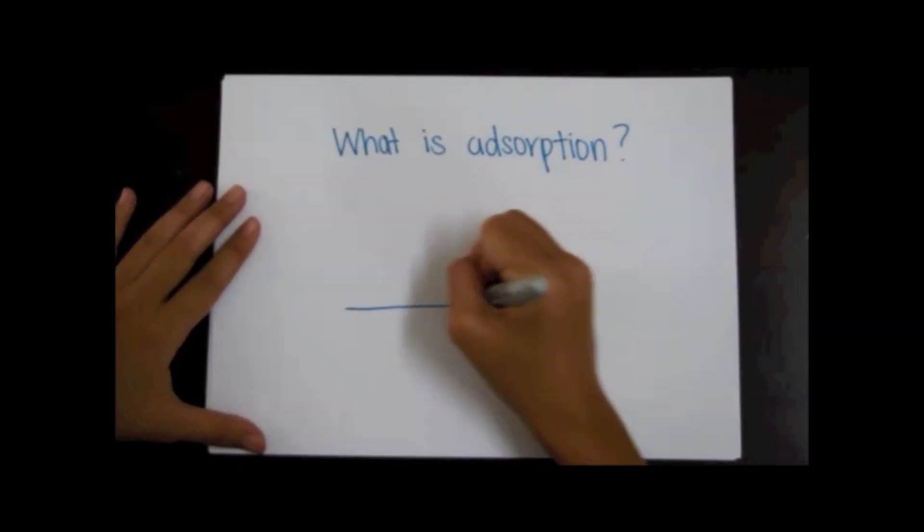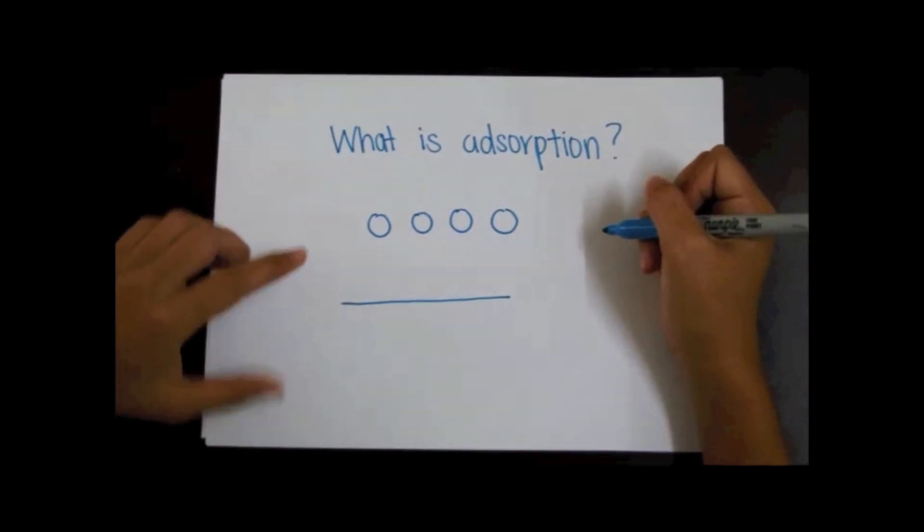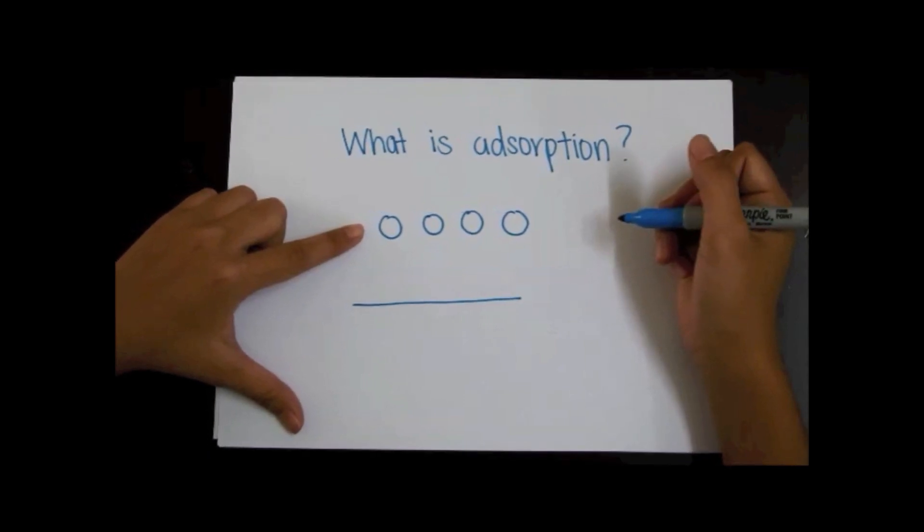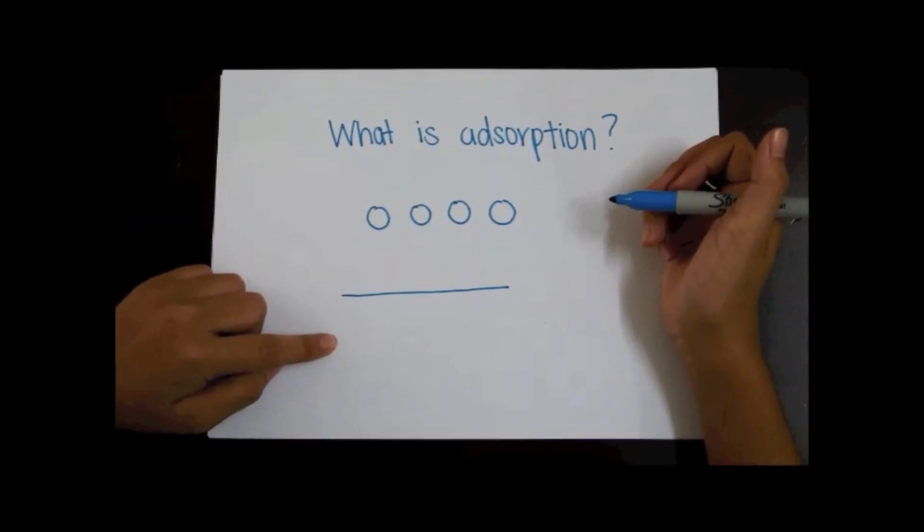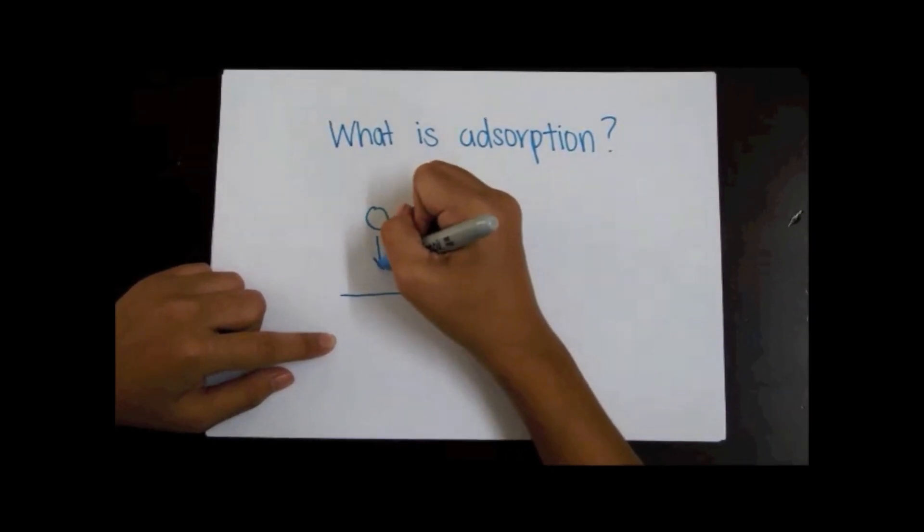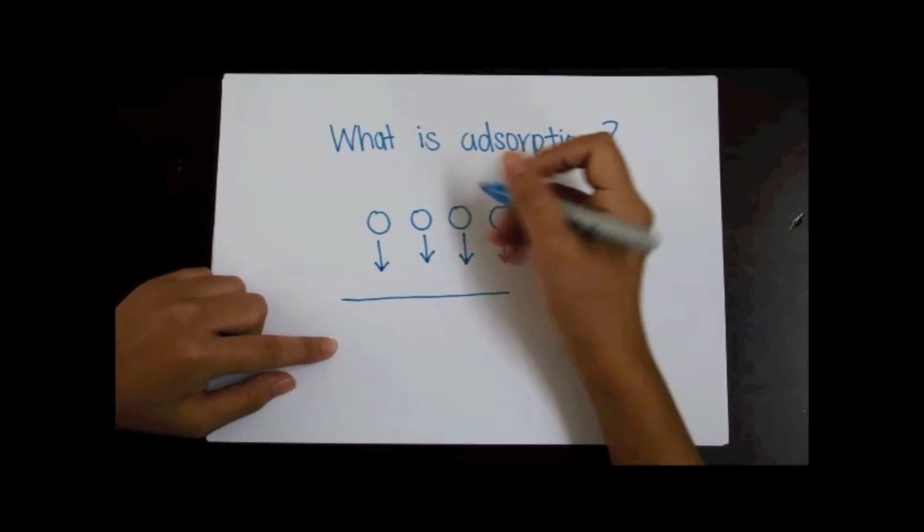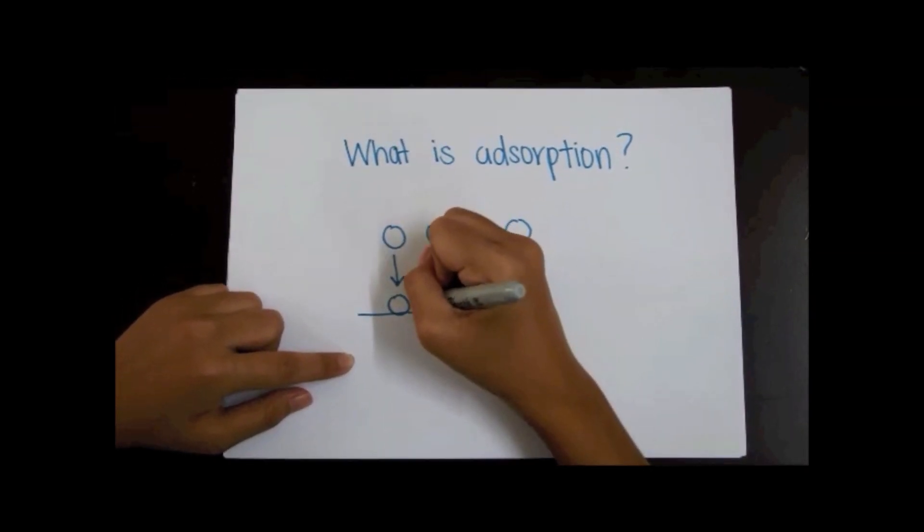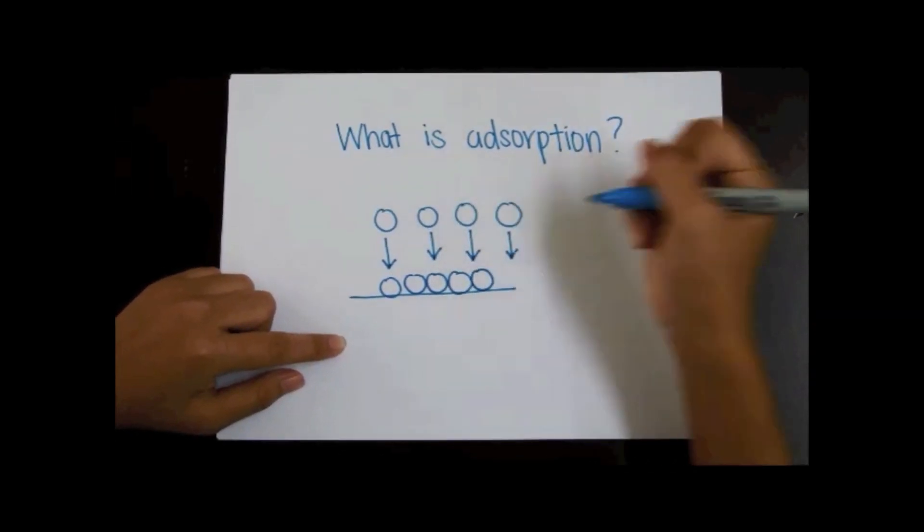In this diagram, we are looking at how the molecules are attracted to the surface. The atoms or molecules that are attracted to the surface are called the adsorbate, whereas the surface to which the molecules are attracted to is called the adsorbent. Here we see the movement of the molecules to the surface, and thus the adhesion will create a film of the adsorbate to the surface of the adsorbent.